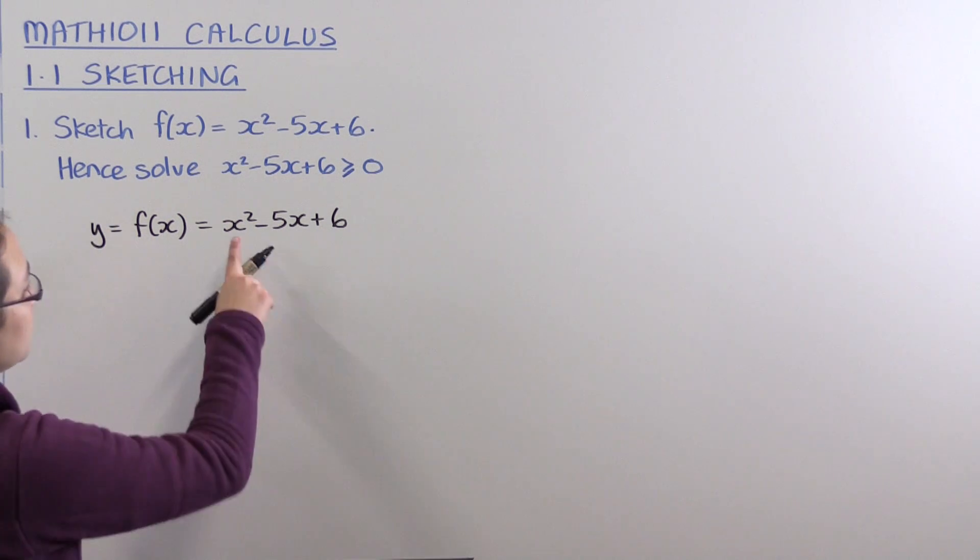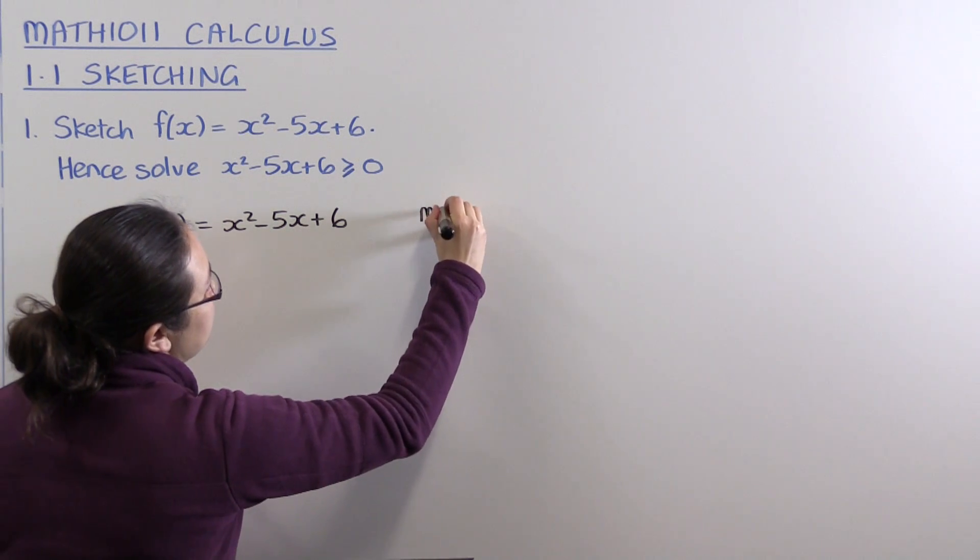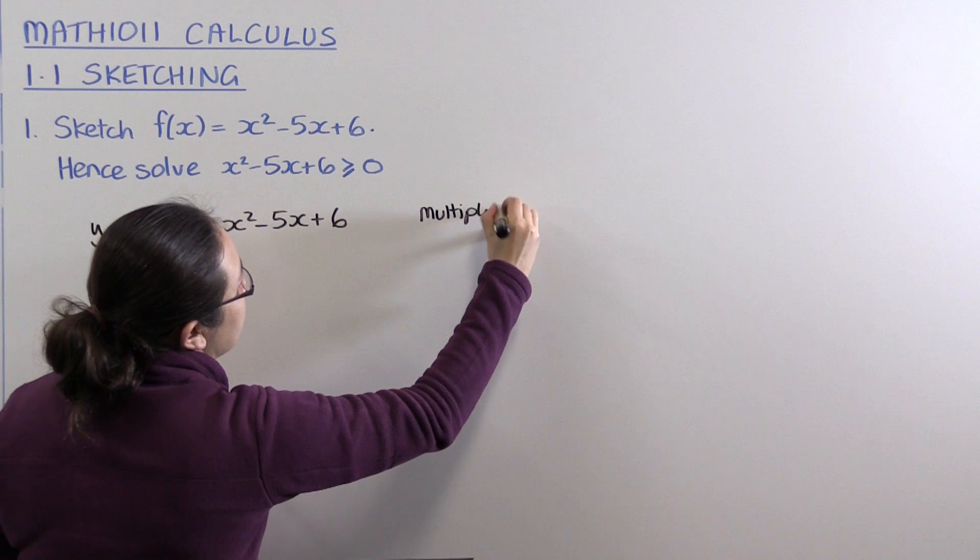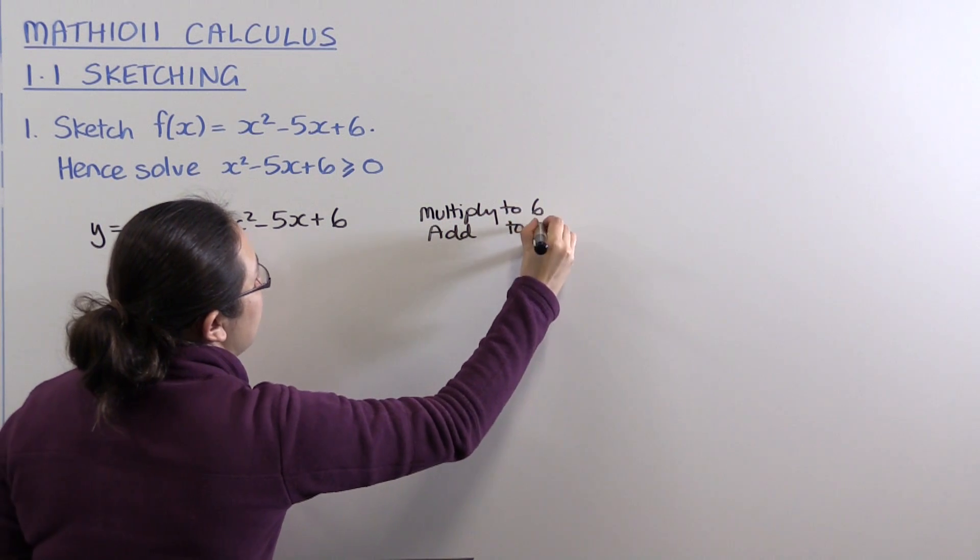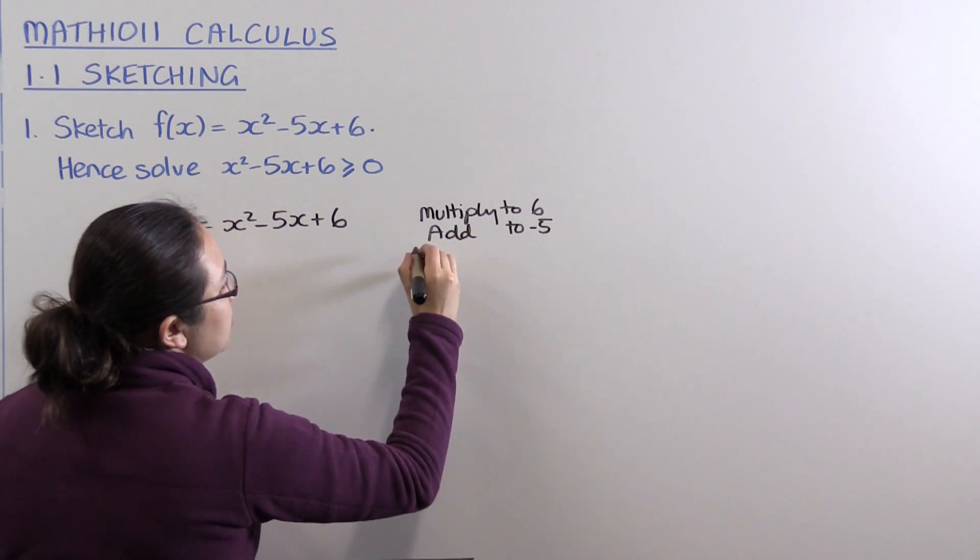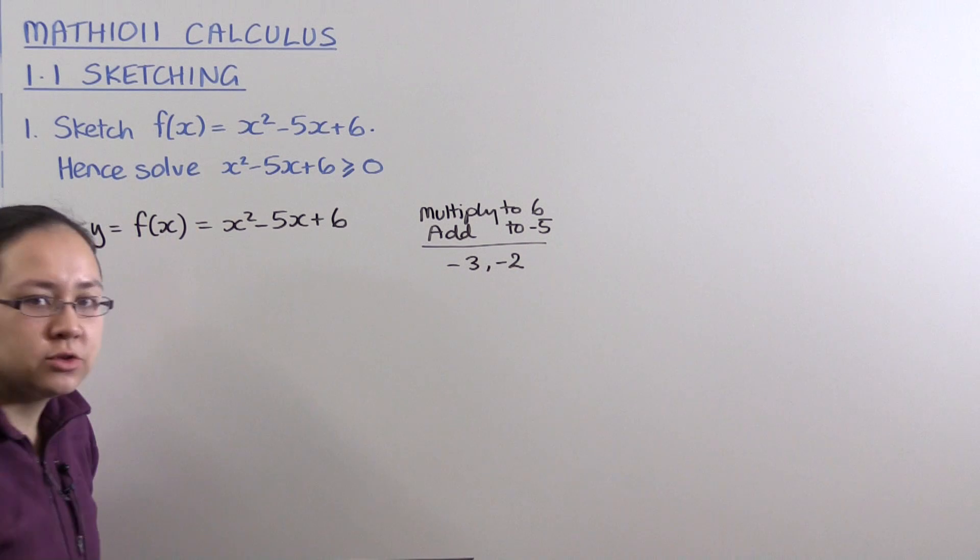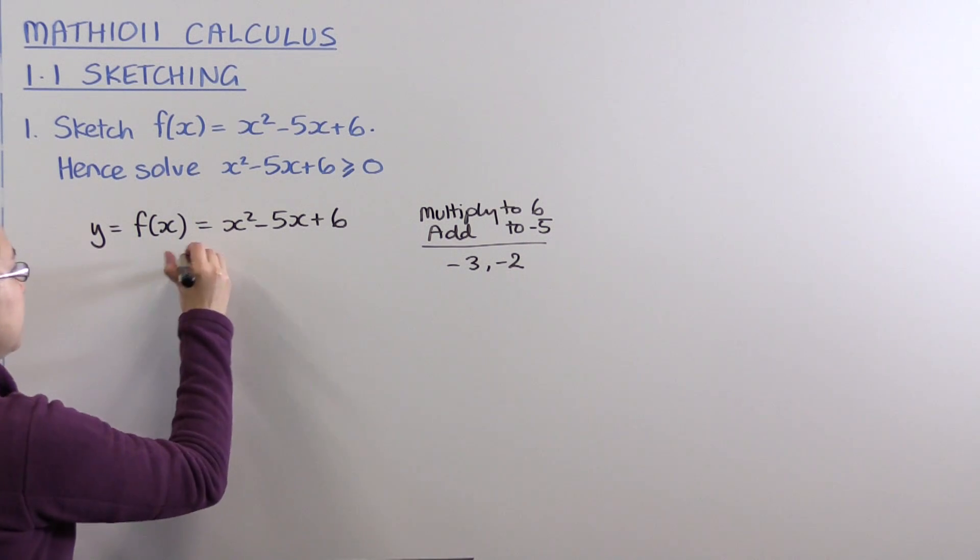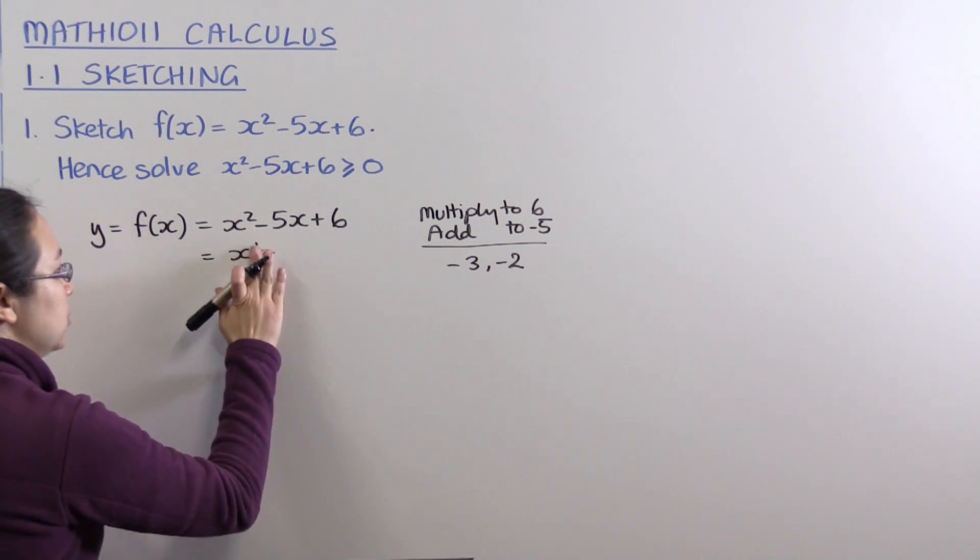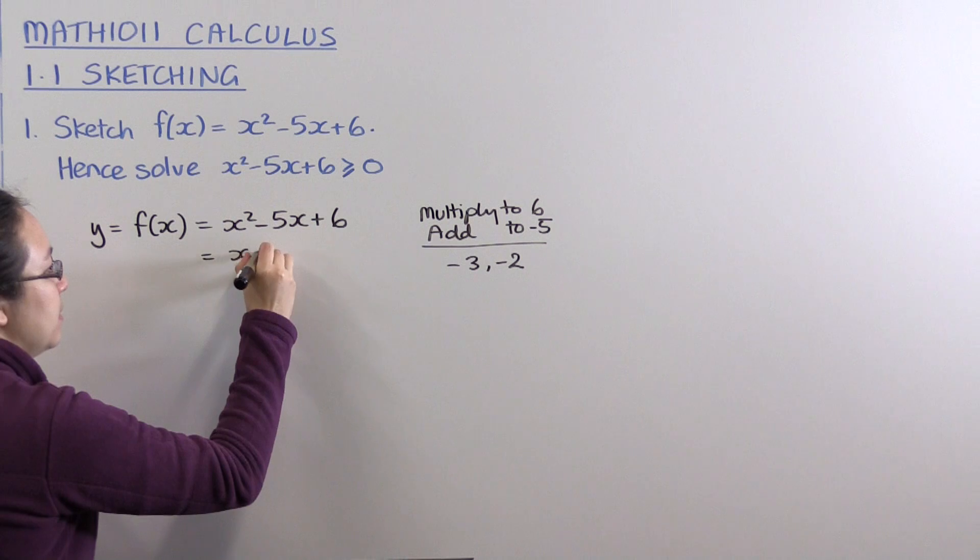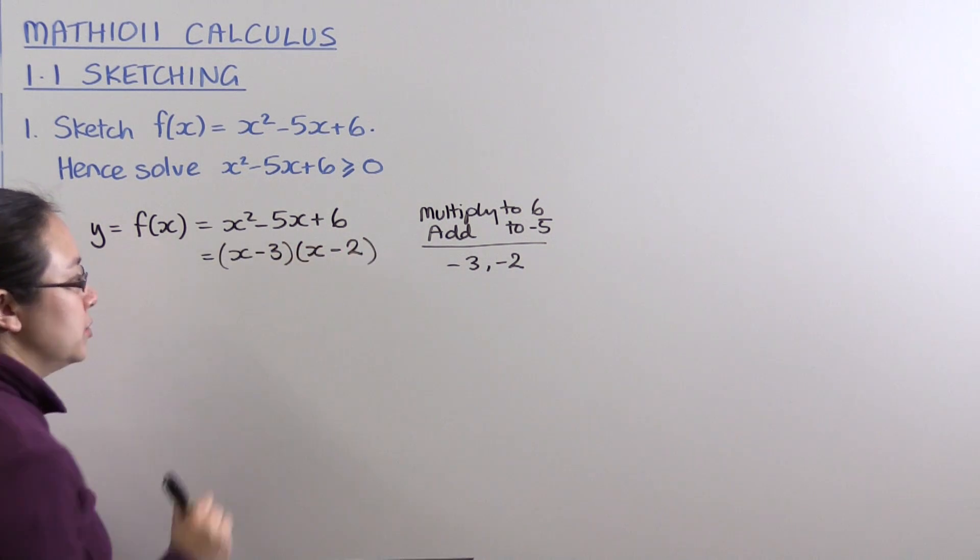To factorize x² - 5x + 6, we're looking for two numbers that multiply to give 6 and add to give -5. Those two numbers are -3 and -2. So this quadratic factorizes to (x - 3)(x - 2).